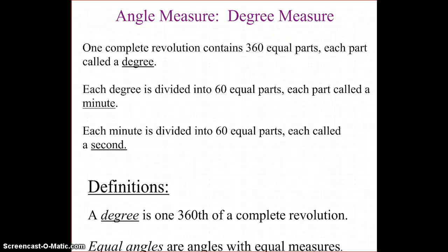Okay, so this lesson is going to be about angle measure and specifically working with degree measure. We need to understand that one complete revolution contains 360 equal parts. Each of these parts is called a degree.